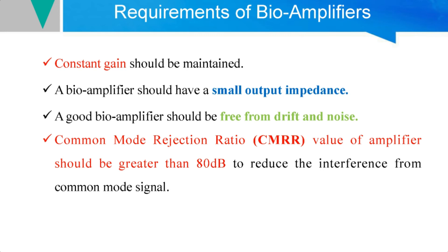The common mode rejection ratio (CMRR) should be greater than 80 dB in order to avoid noise and interference. To summarize the major requirements: there should be isolation to prevent shock, high input impedance, low output impedance, freedom from drift and noise, and a constant gain maintained throughout the amplifier.